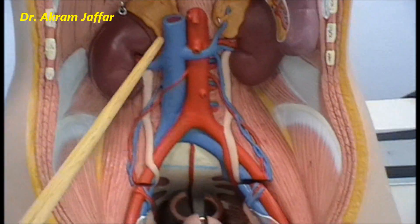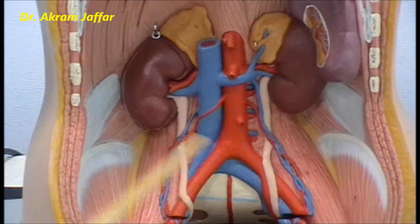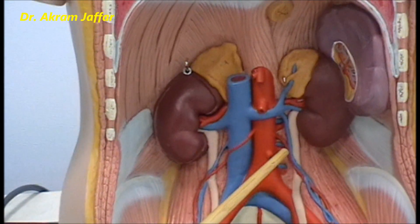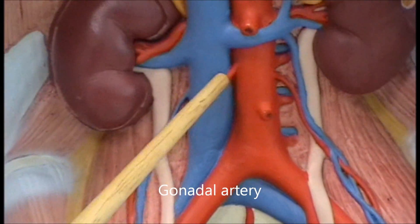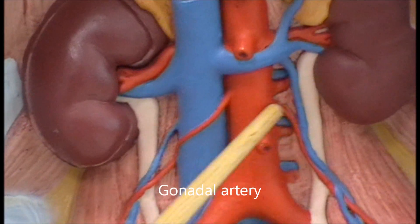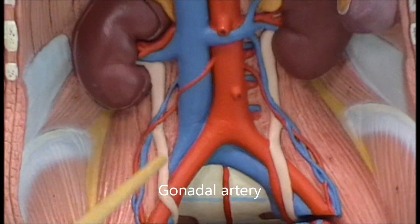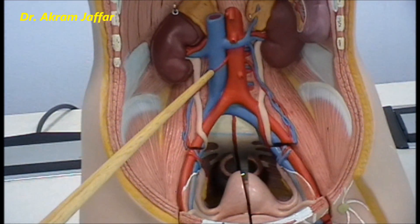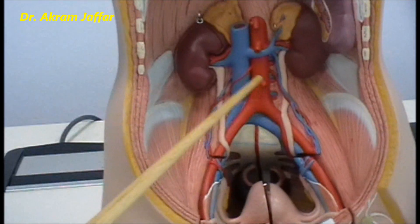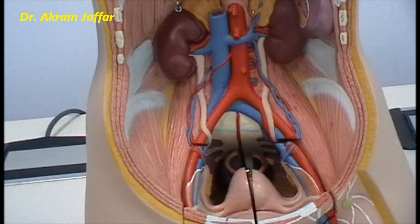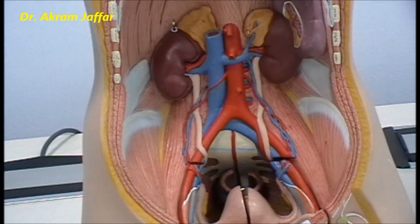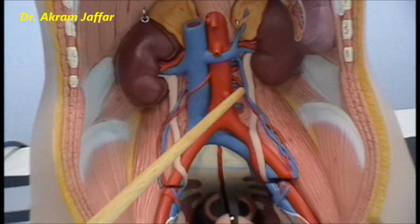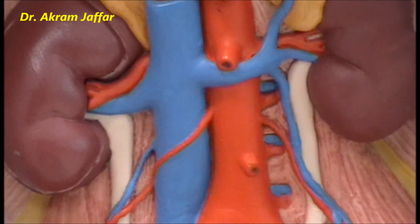The other branches of the abdominal aorta are the gonadal arteries. In this female model, these are the ovarian arteries, which extend down into the pelvis. In a male, they would be testicular arteries, passing down through the inguinal canal to reach the testis. The origin of these gonadal vessels from the posterior abdominal wall reflects the embryological origin of the gonads and their subsequent descent — as they descend, they drag their blood supply, nerve supply, and lymphatic drainage with them.